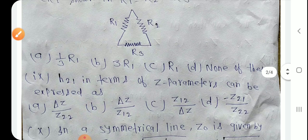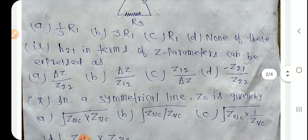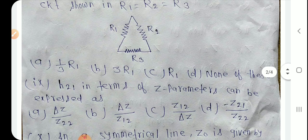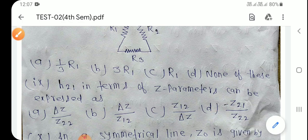Question number 9: H21 in terms of H parameters can be expressed as — H21 = −Z21/Z22। Option D is the right answer.